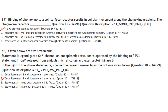Binding of a chemokine to a cell surface receptor results in cellular movement along the chemokine gradient. The chemokine receptor is a G-protein-coupled receptor. Answer is option 1.